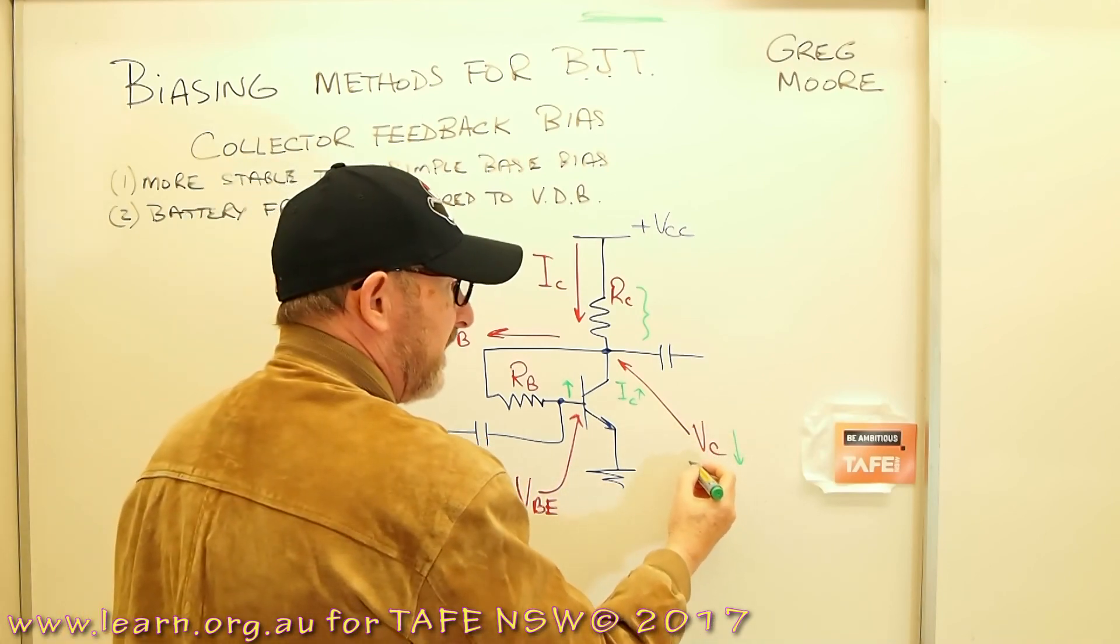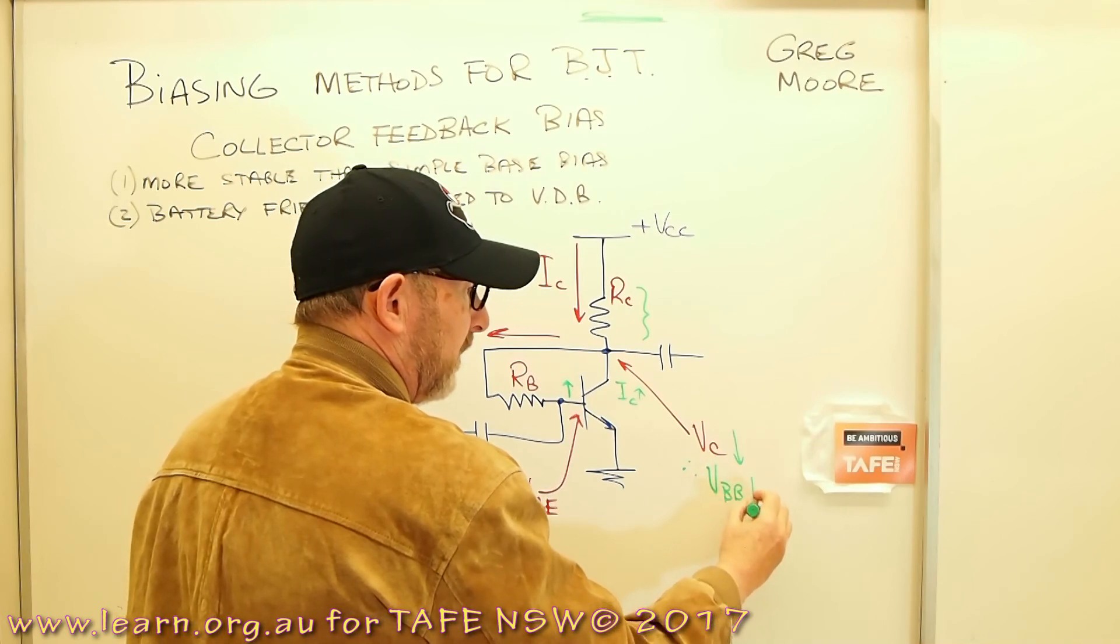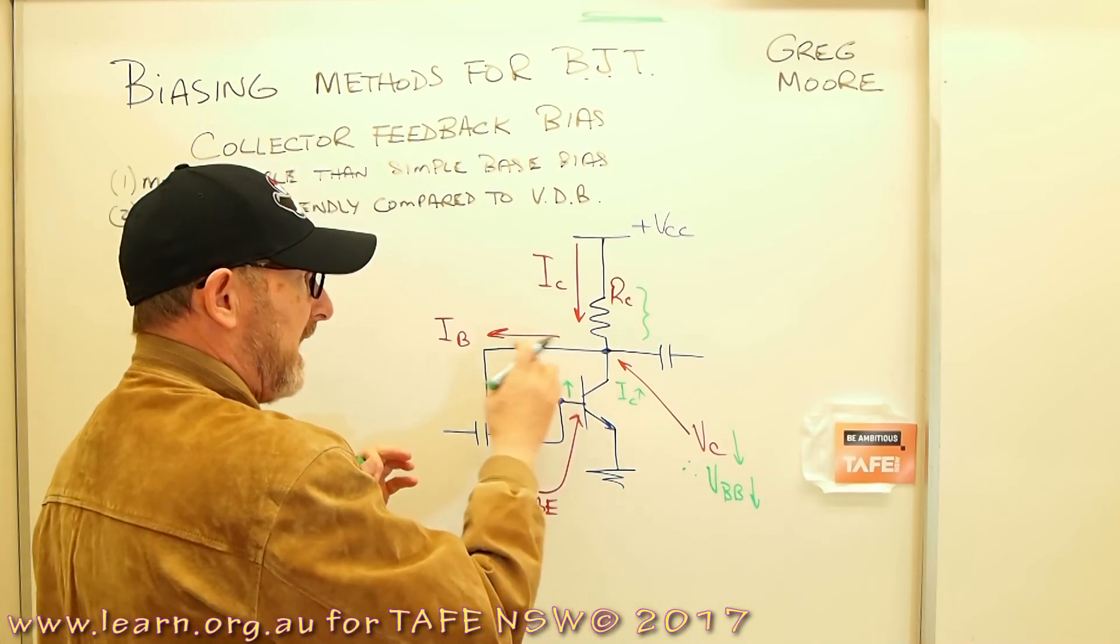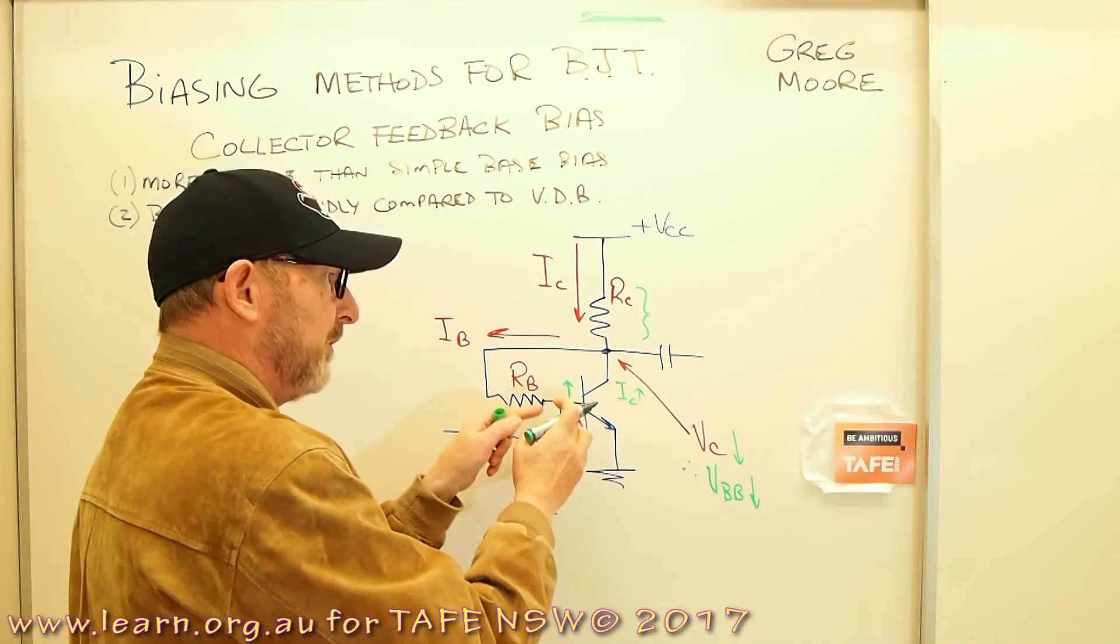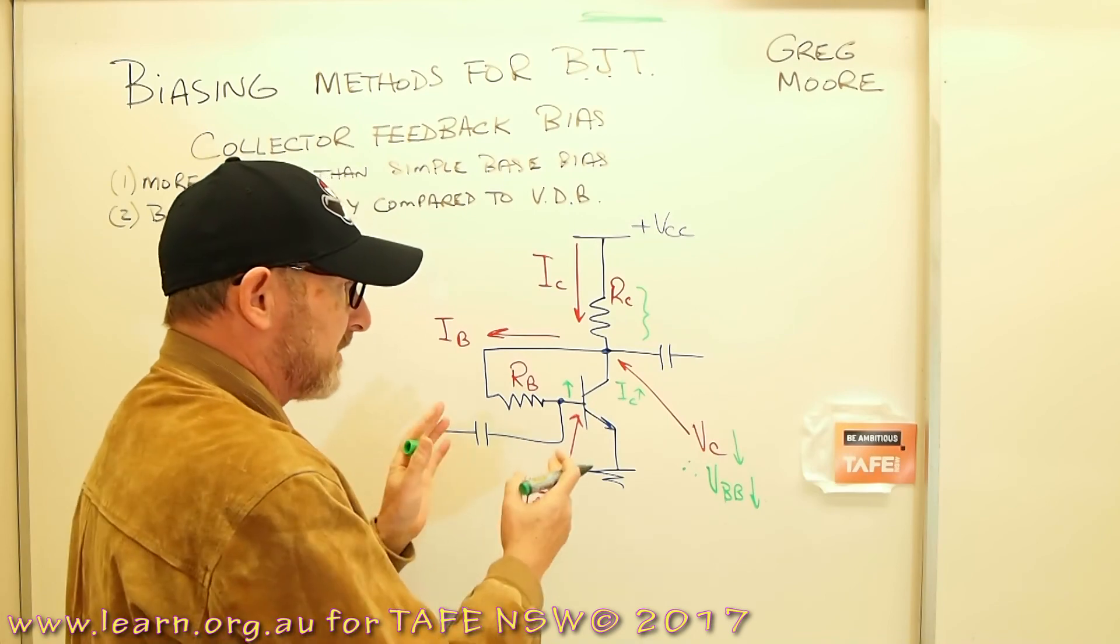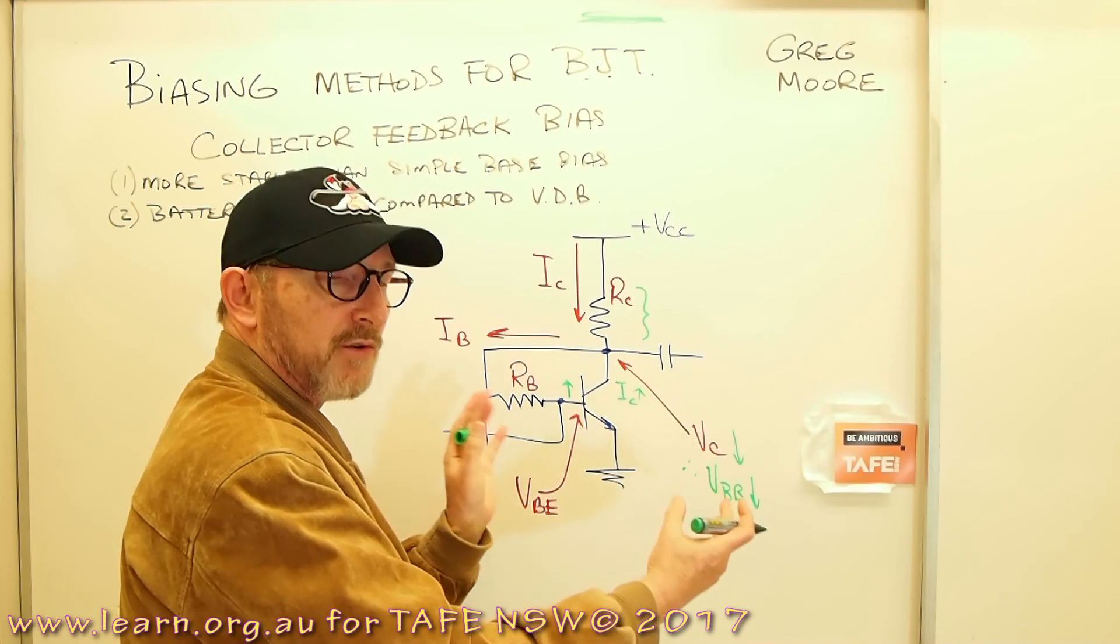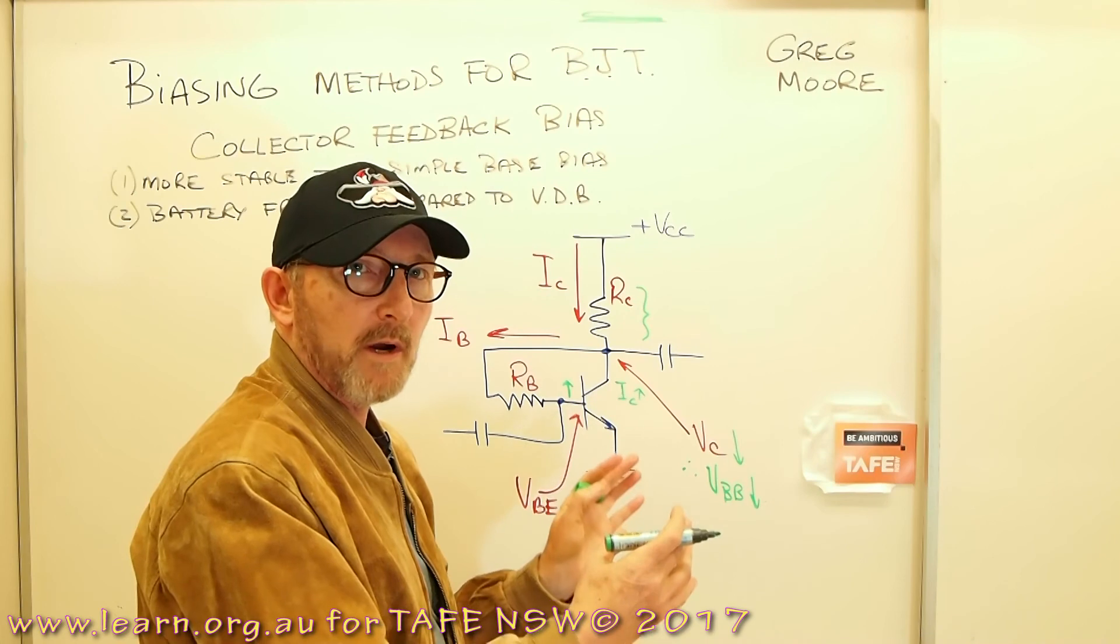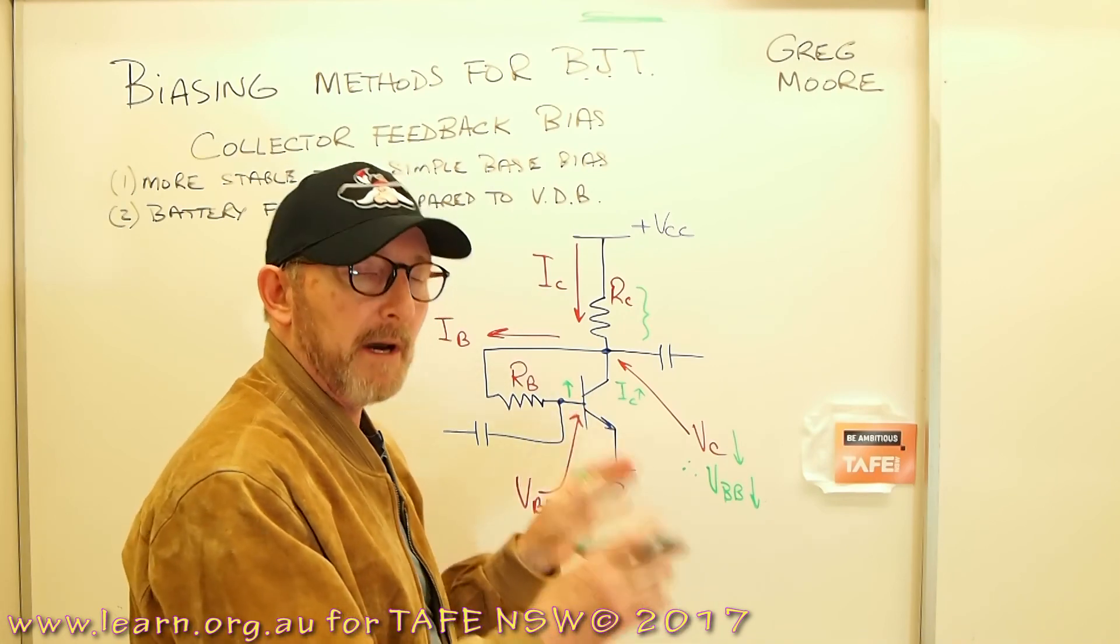If VC falls, therefore VBB also falls, the biasing voltage for the base falls, and therefore the actual turn-on characteristics or the turn-on voltage for the transistor is pushed down. So the transistor folds back, the current and the voltage for the transistor folds back. So we do not get, we cannot get that runaway that we saw in previous videos with simple base bias.